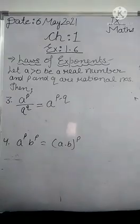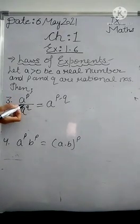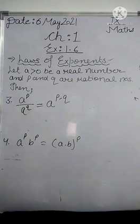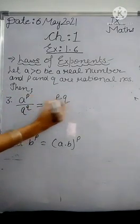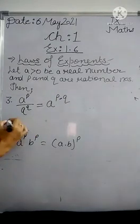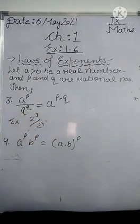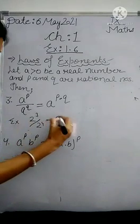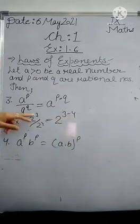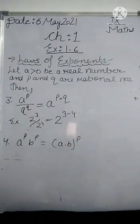Third is a power p divided by a power q. You can see that here the base is same but the operator between these bases is division. In this case, when we have same base and the operator is divide, then the powers are subtracted from each other. For example, if I have 2 power 3 divided by 2 power 4, base is same, so result will be 2 power 3 minus 4. The power will be subtracted.